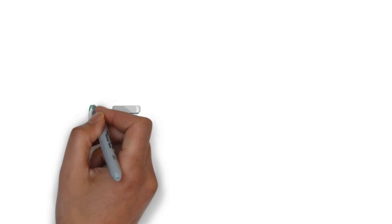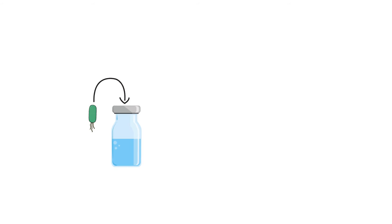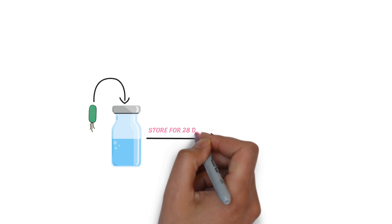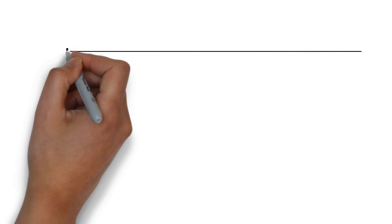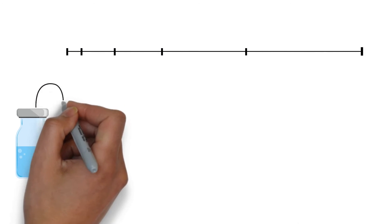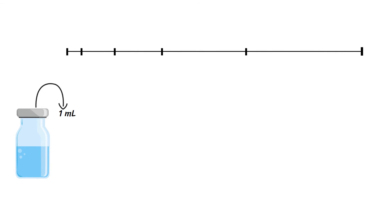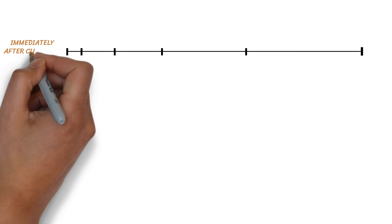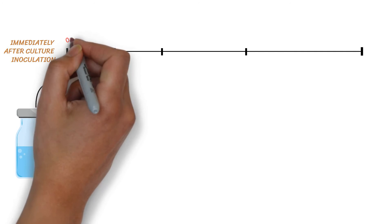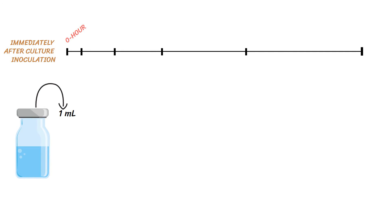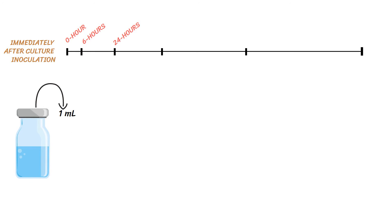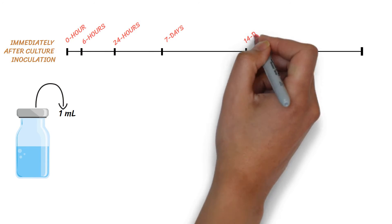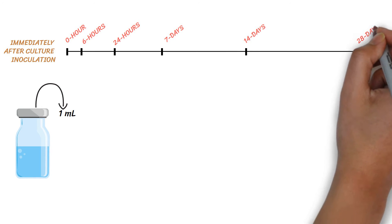Inoculate the microorganisms directly into the product container and store the container for 28 days at ambient temperature, protected from light. At different time intervals, collect 1 milliliter of sample directly from the product container — immediately after inoculation for the 0-hour enumeration, then after 6 hours, 24 hours, 7 days, 14 days, and finally on the 28th day.